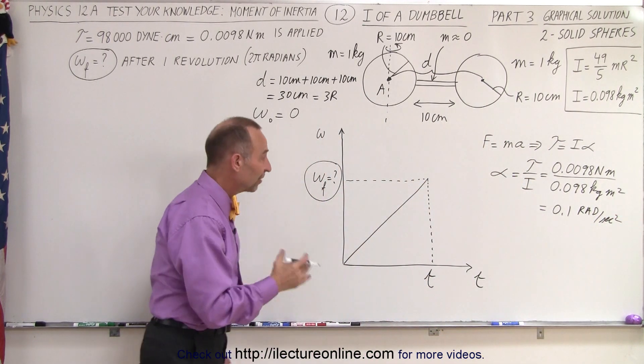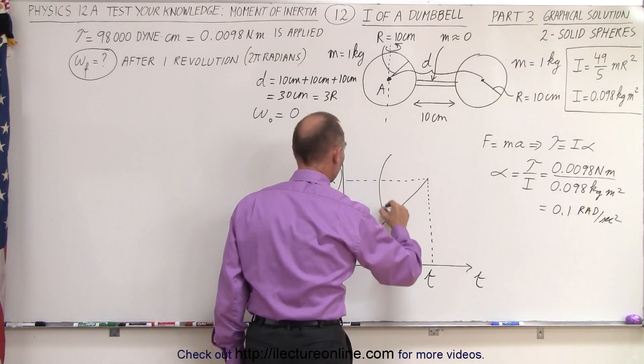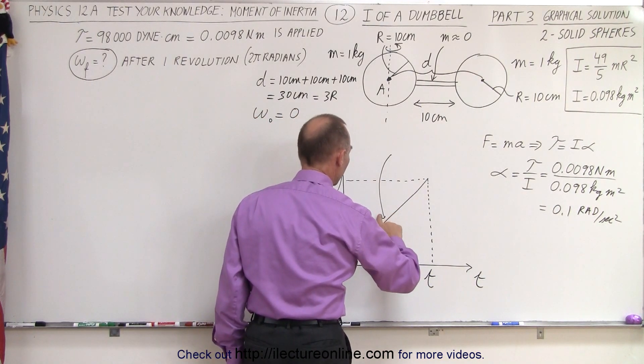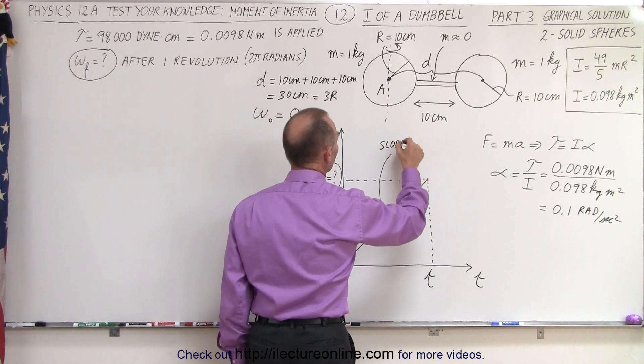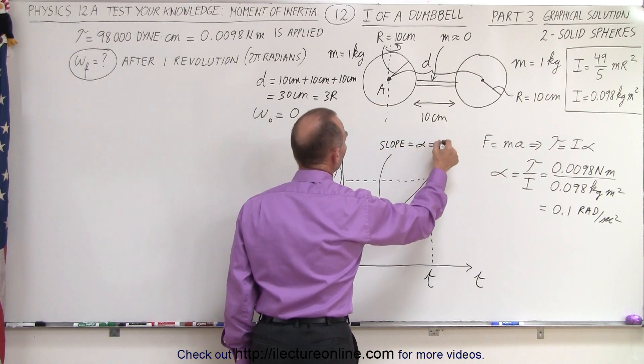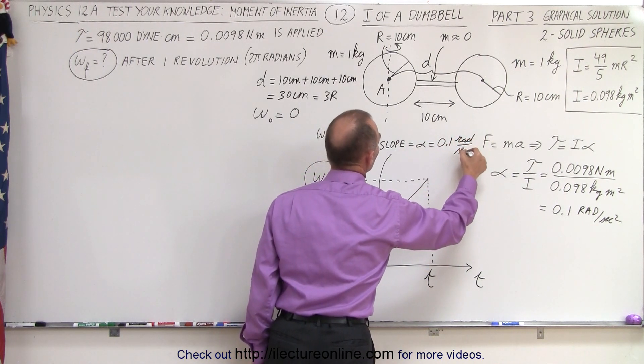And in the omega versus time graph, the slope is equal to the angular acceleration. So we can say that the slope of this graph is equal to alpha is equal to 0.1 radians per second squared.